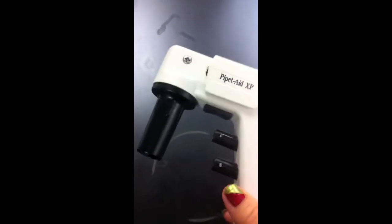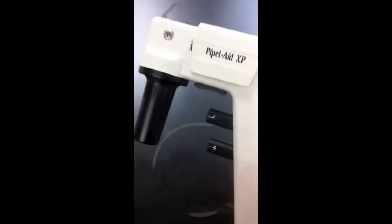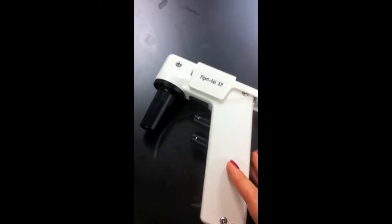So I need to change the filter in this pipetter, Drummond pipetter. And the way to do this is to take the filter out.